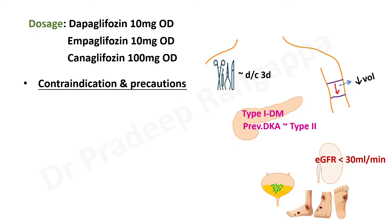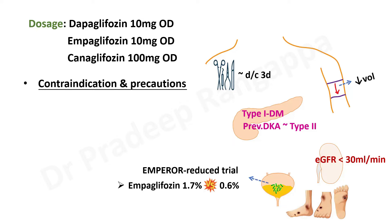Anyone at high risk of peripheral vascular disease or diabetic foot ulcers who may be at risk of amputation — SGLT2 inhibitors are to be avoided. The EMPEROR-Reduced trial showed that the risk of UTI was 1.7% in patients who received Empagliflozin compared to 0.6% in the placebo group, confirming that this drug does increase the risk of developing UTI because of its glycosuric mechanism.